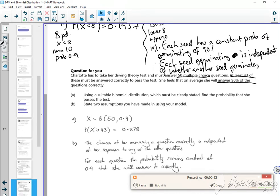So 90% is my success rate. The number of trials is 50, and I'm interested in getting more than 43. I would do a BCD with a lower of 43, an upper of 50, a number of trials of 50 if you can read my writing, and a probability of 0.9. State two assumptions.